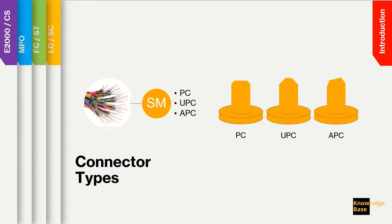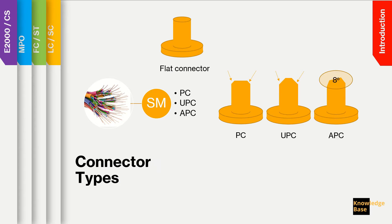Initially, connectors were made with a flat contact, having a flat surface. The PC connector has a slight spherical cone design that gave a great improvement in performance. The UPC connector is an improved version of the PC connector with a better convex surface finish, resulting in even better attenuation and return loss. The APC connector adds an 8-degree angle tip that results in low return loss in the region of minus 60 dB. The angle is an important factor in reducing return loss, as any light that is reflected towards the surface of the connector is directed into the fiber cladding rather than going back inside the fiber.